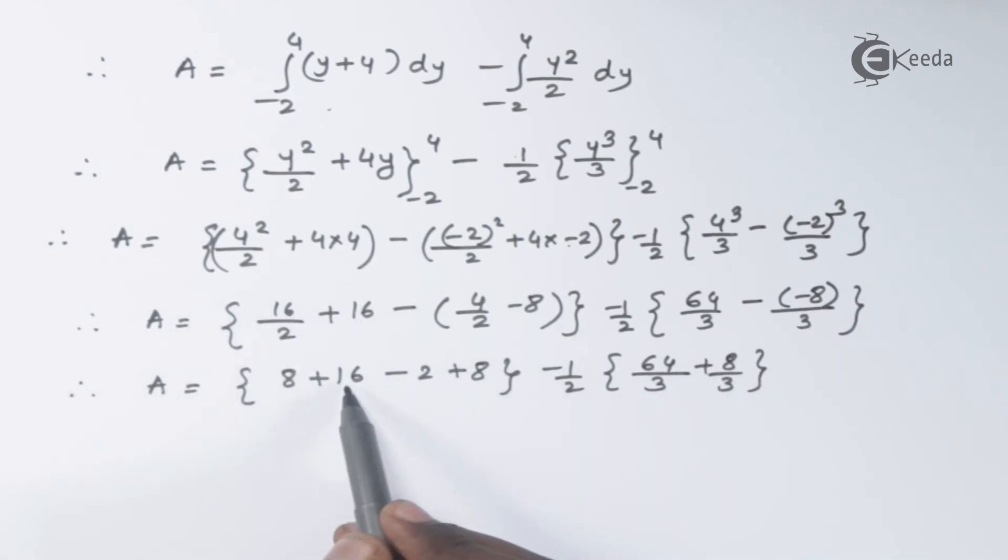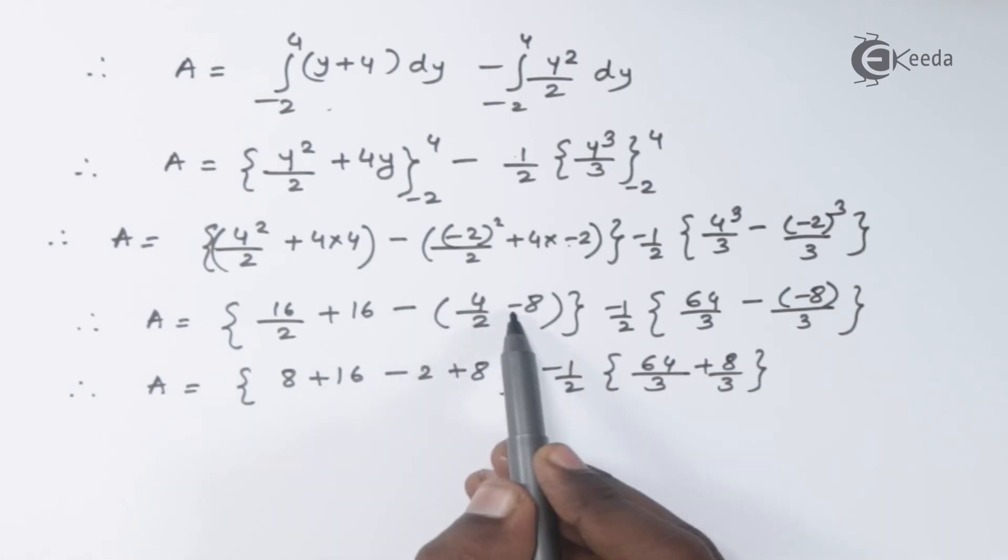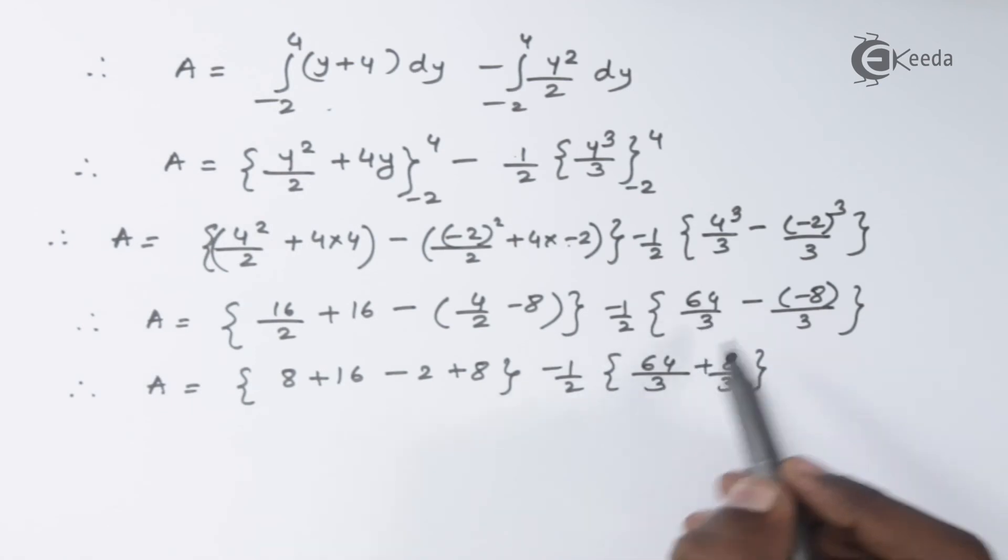In the next step, we have 16/2, that is 8, plus 16, 4/2 will give you 2, this will become -2 and minus of minus will give you +8. Minus 1/2, followed by 64/3, minus of minus will be +8/3.